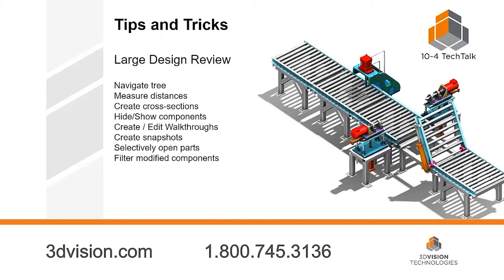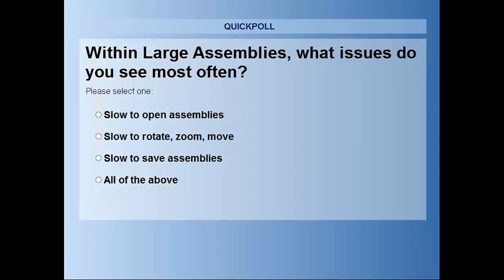The biggest thing you can do to improve performance — if you have a huge assembly you're not making direct edits to, but maybe measuring, doing cross sections, or making a walkthrough of a factory floor — is to use Large Design Review. That's an option in your file open menu and it basically loads the entire assembly as graphics only. Everything is essentially speed packed. The nice thing is you can selectively open certain components in context while everything else remains graphics. This opens assemblies that would take 30 minutes in just two seconds — it's amazing how fast Large Design Review works.